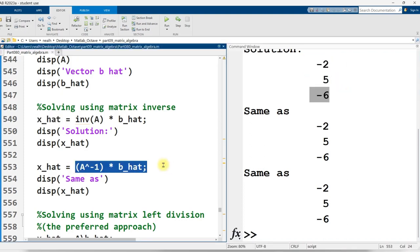Now the second way to do it is basically the exact same thing. It's just instead of using the inverse function, we're going to raise A to the negative one power, and then matrix multiply times B hat.